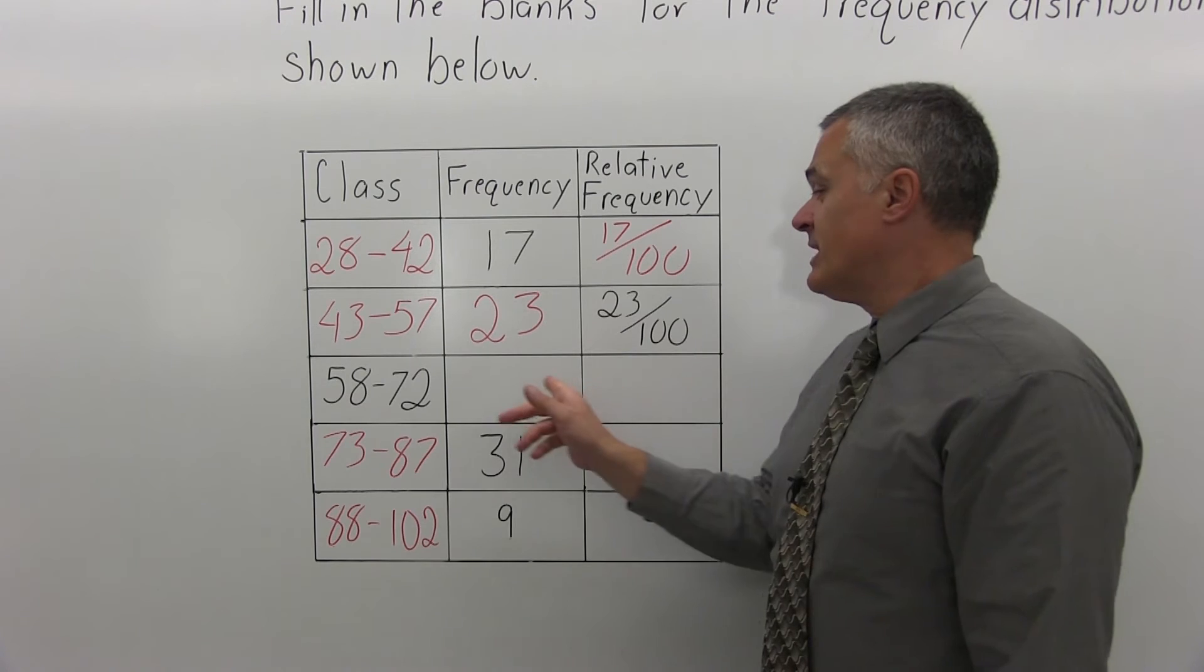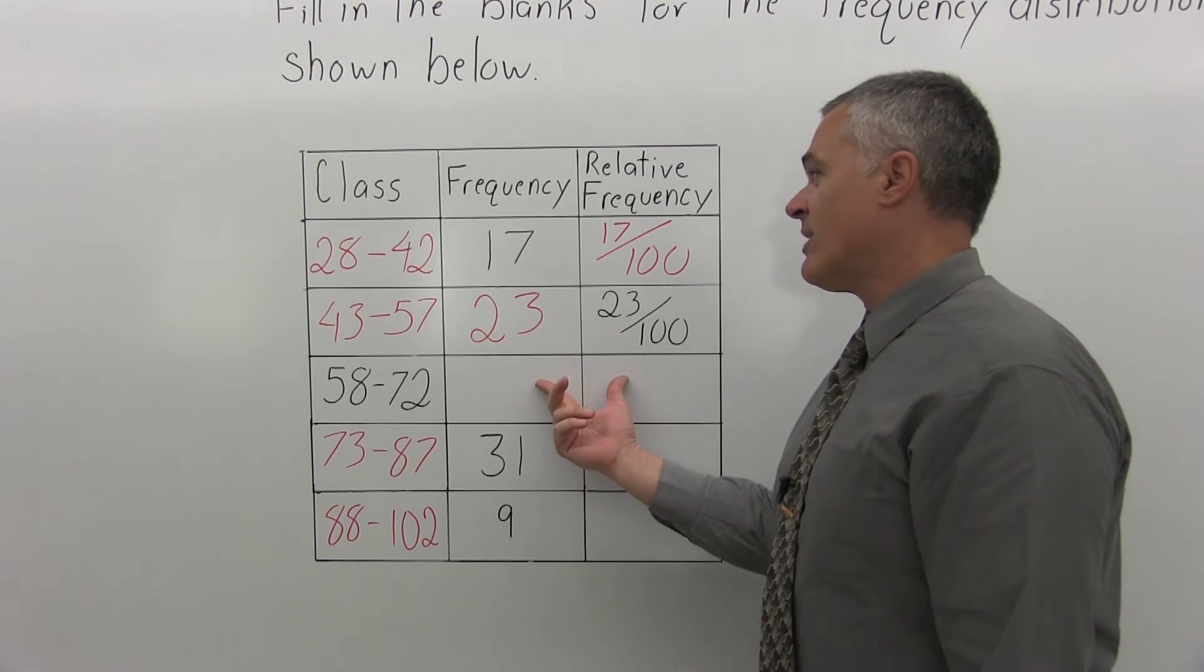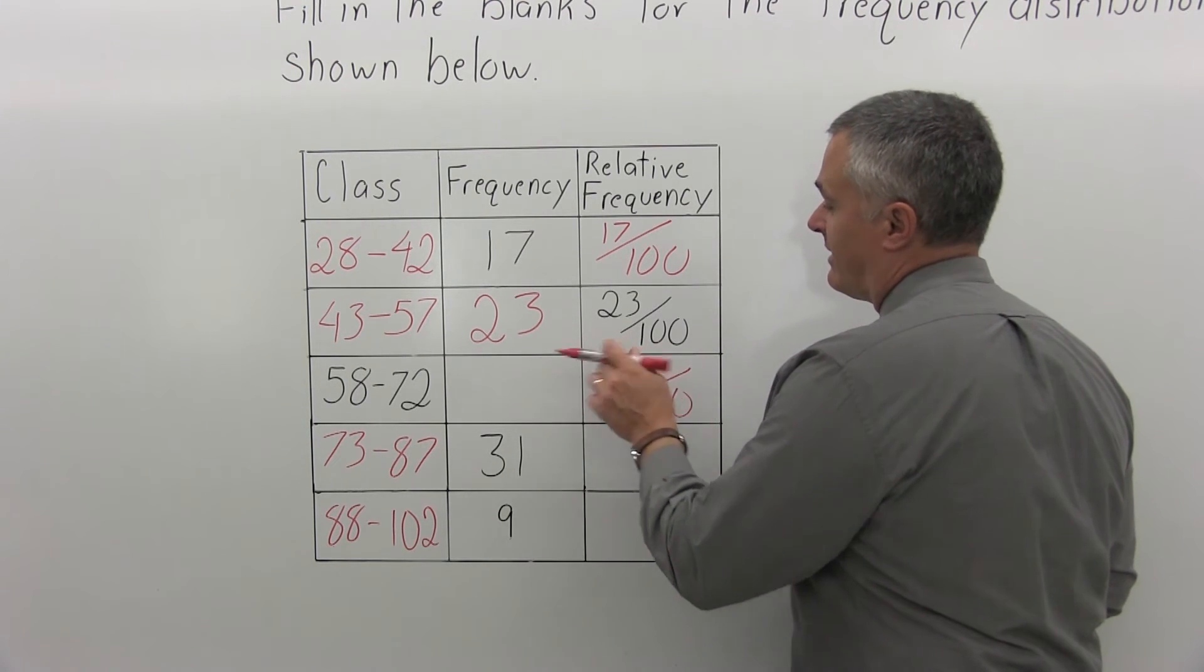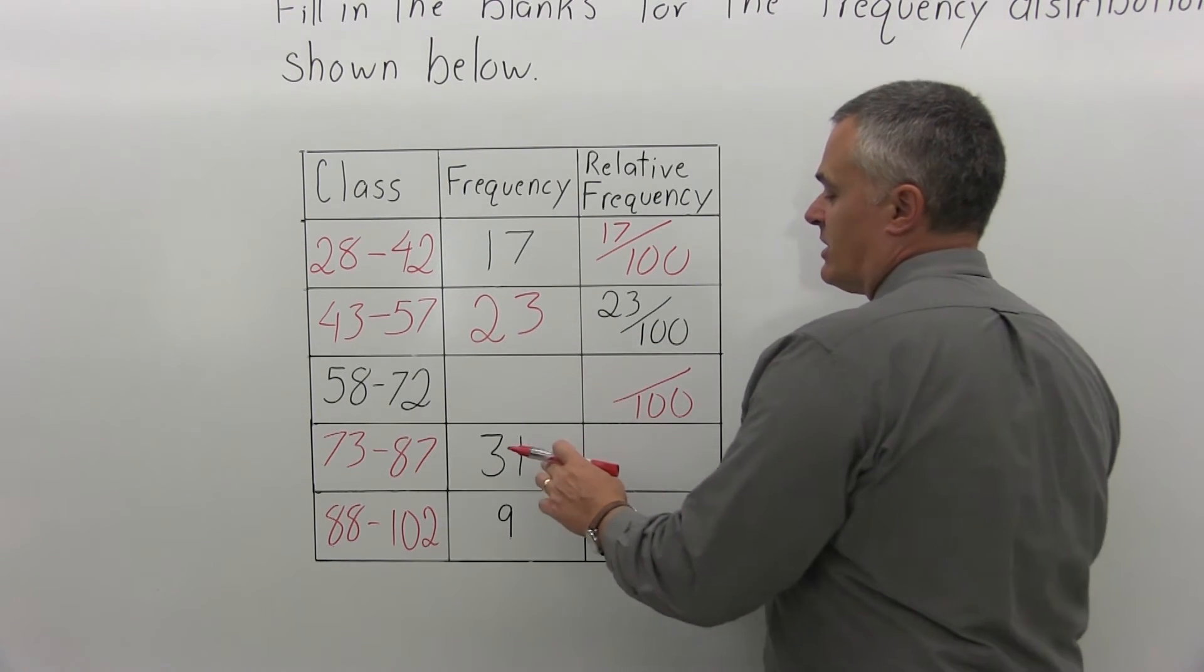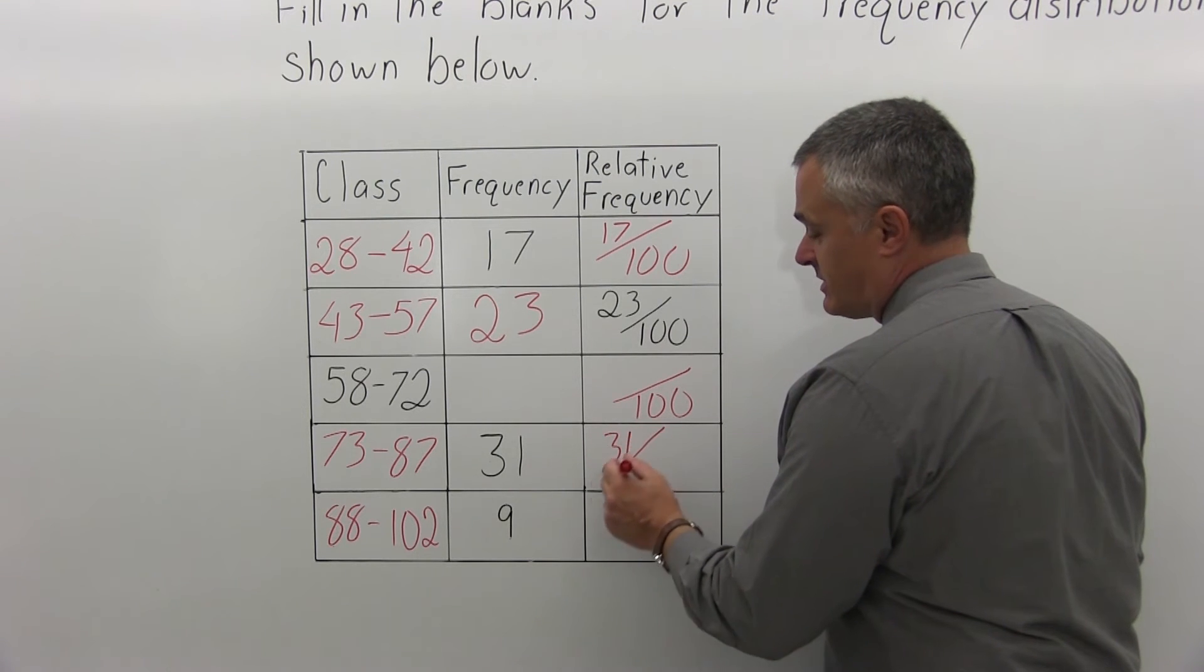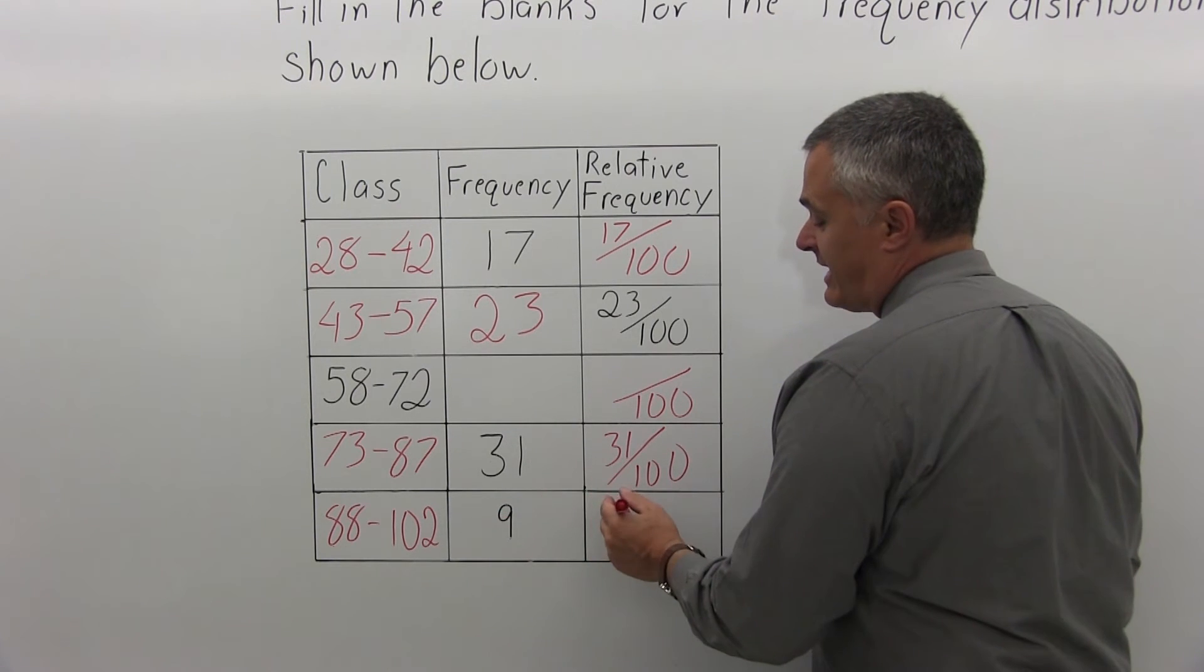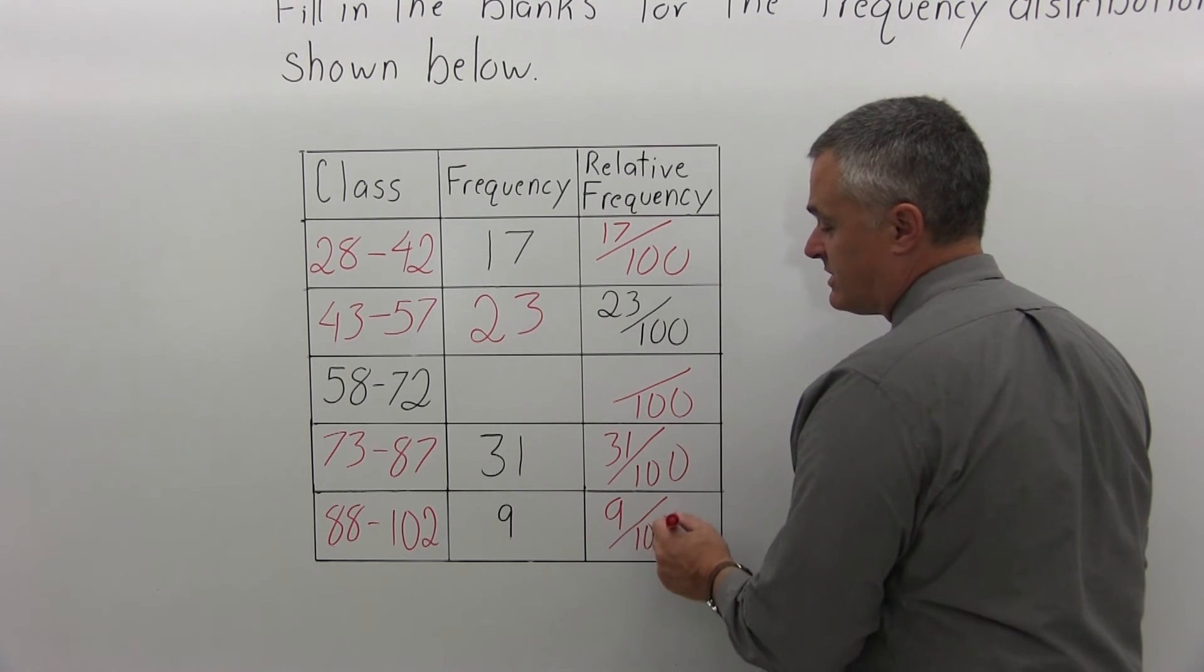And now, the next class with the 58 to 72 class limits, I don't have either the frequency or the relative frequency. I know it's something over 100, but I can't get the numerator until I do a little bit more work. So the next class down after that has a frequency of 31. So its relative frequency is that frequency of 31 over the total of 100. And finally, the last class has a frequency of 9, so its relative frequency is that frequency of 9 over the total of all the frequencies, which is 100.